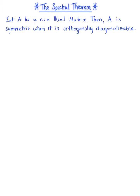We are now ready for the Spectral Theorem, which says that if we let A be an n by n real matrix, then matrix A is symmetric when it is orthogonally diagonalizable.